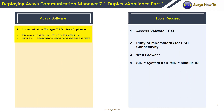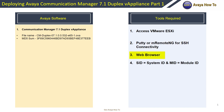The software required for this implementation is going to be Communication Manager 7.1 Duplex V Appliance. The tools we're going to need are access to VMware, PuTTY or M-Remote-NG for SSH connectivity, a web browser, and your system ID and module ID.